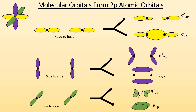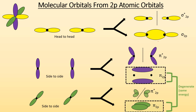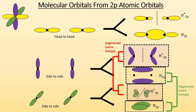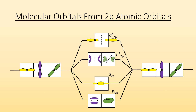Looking at all the molecular orbitals from 2p atomic orbitals: some of these are degenerate, meaning they're the same energy. The pi bonding molecular orbitals are degenerate — same energy as each other. The pi star 2p anti-bonding molecular orbitals are also degenerate with each other. So the molecular orbital diagram has those degenerate pi bonding orbitals side by side, and the degenerate anti-bonding ones side by side as well.